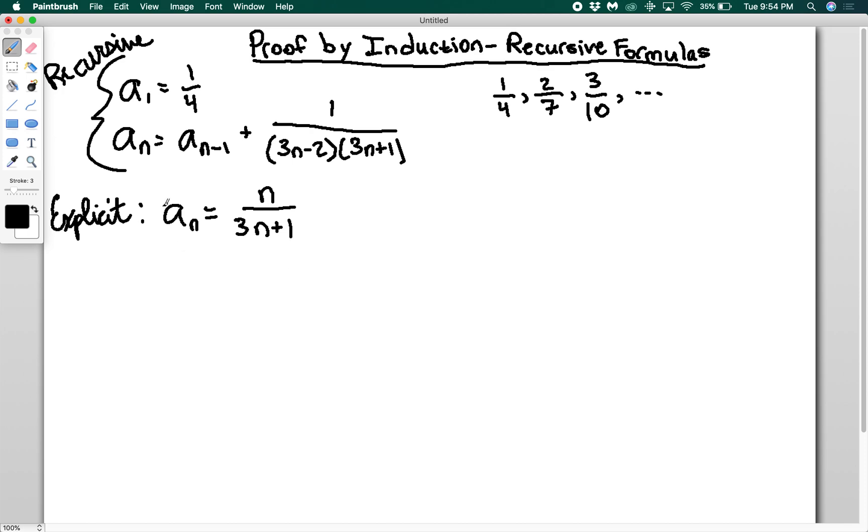Now what becomes harder is proving the explicit formula works given the recursive. We're assuming that an = n/(3n+1), and we want to prove that an+1 = (n+1)/(3n+4), where we substitute n for n+1. You might notice I'm doing stuff with n and n+1.